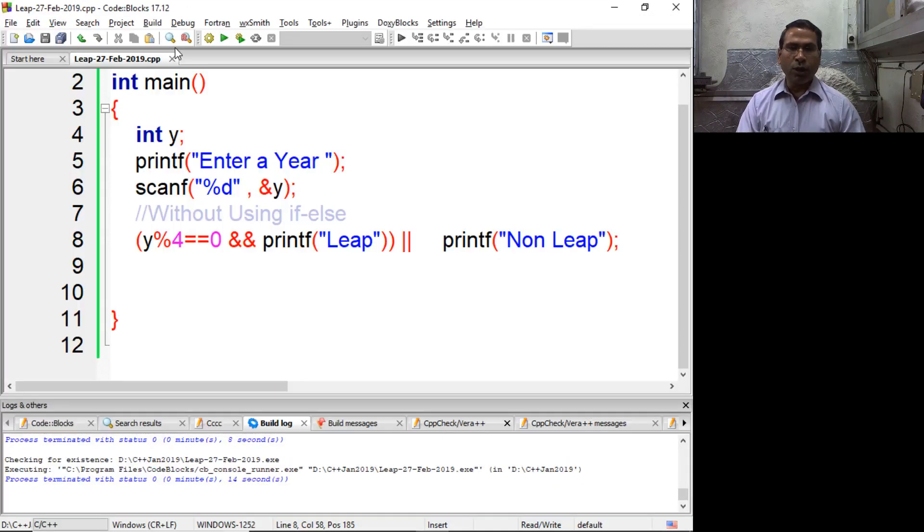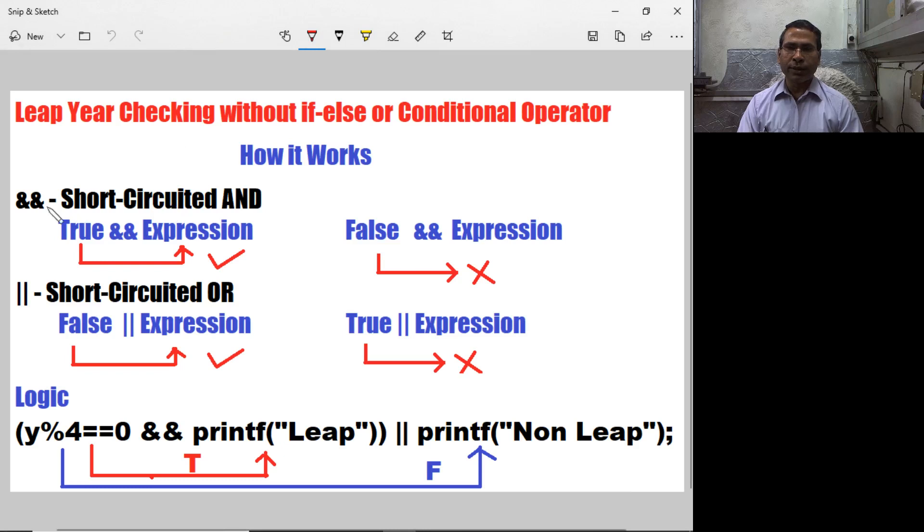Now how is it working? This is known as short-circuit AND. Whenever the condition is true it will execute the next expression, but if the condition is false it will not execute the next expression. Similarly, this is short-circuit OR. If the condition is false it will check the next expression. If the condition is true it will not check the next expression.